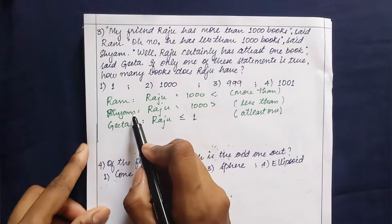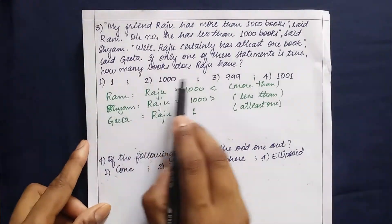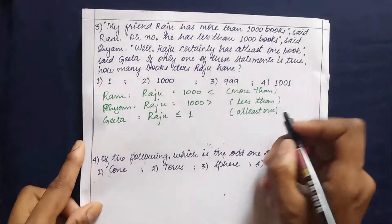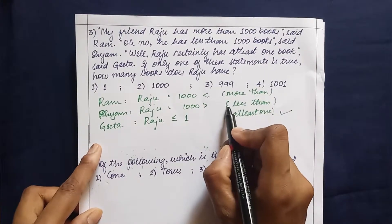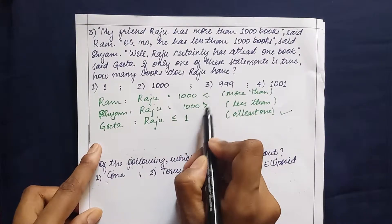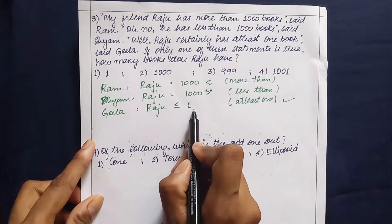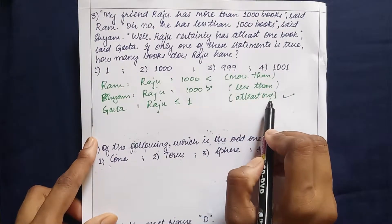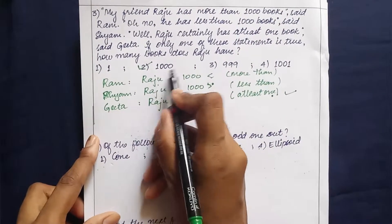It is given that only one of these statements is true. First, considering the given options, zero is not one of the options, so it is evident that Gita's statement is true. To eliminate both Ram's and Shyam's statements we need a value in between — Ram says more than 1000 and Shyam says less than 1000. Neither mentions 1000 exactly. So only 1000 can satisfy all three conditions with only one being true. 1000 is the correct answer.